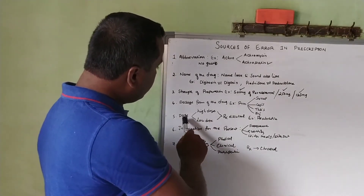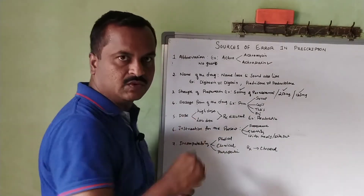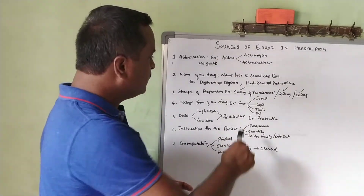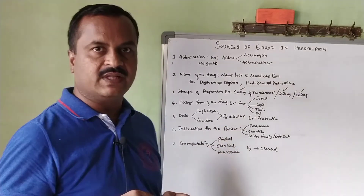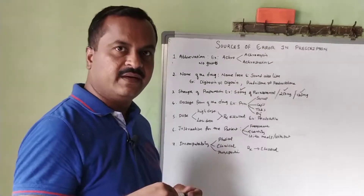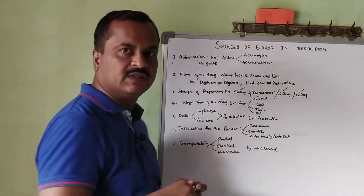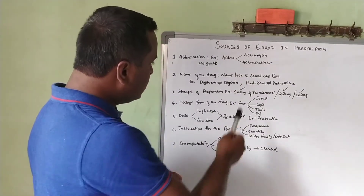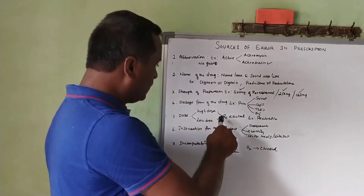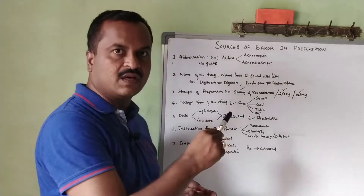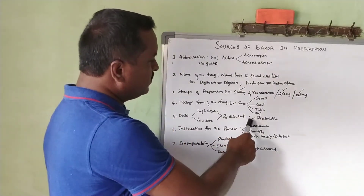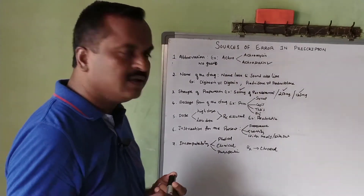The fifth error is the dose. Most drug doses listed in textbooks are for adults — whether male or female. However, for pediatric or geriatric patients, the dose quantity differs. In such cases, the pharmacist must discuss with the physician and clarify whether the prescribed drug dose is appropriate — whether a higher or lower dose is needed for geriatric or pediatric patients.